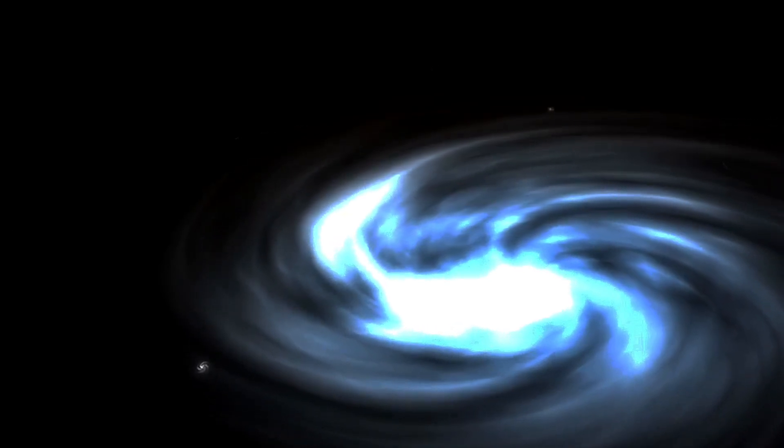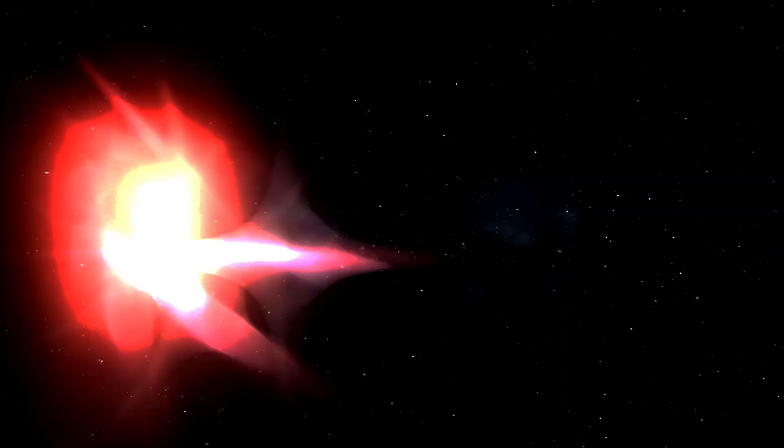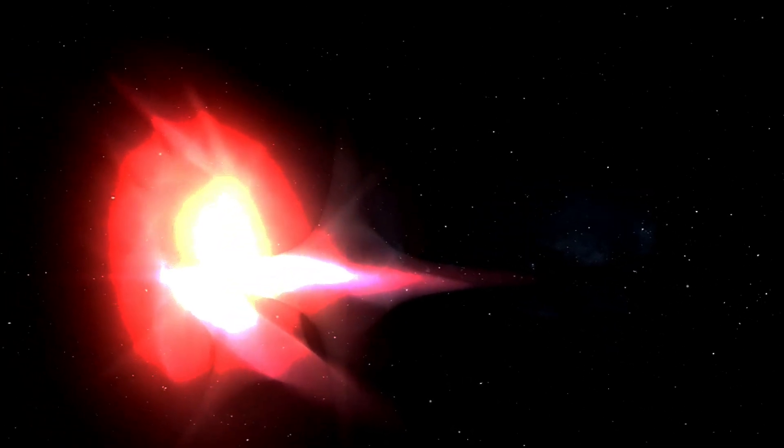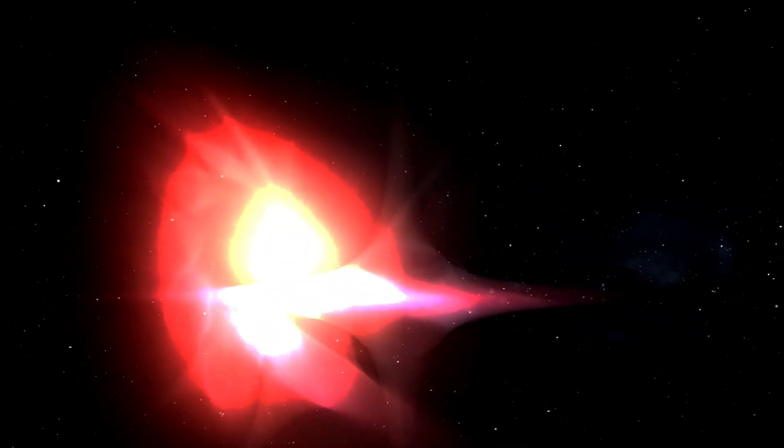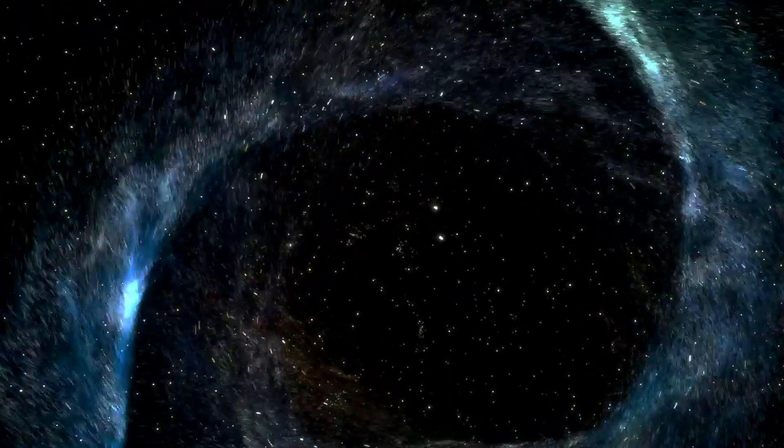Astrophysical Jets are streams of ionized matter that are ejected from the vicinity of a central object, such as a black hole, neutron star, or young stellar object. These jets consist of particles like electrons and protons, as well as electromagnetic fields. The matter in these jets can be accelerated to speeds close to the speed of light, making some astrophysical jets relativistic jets.